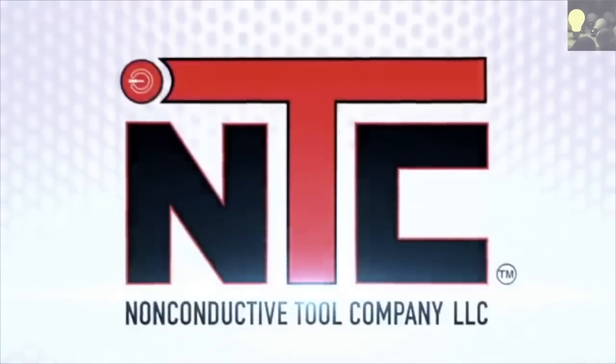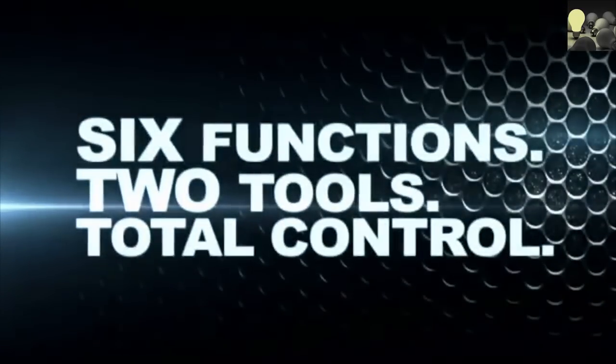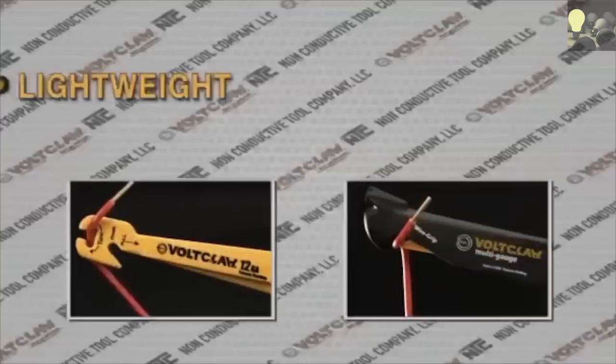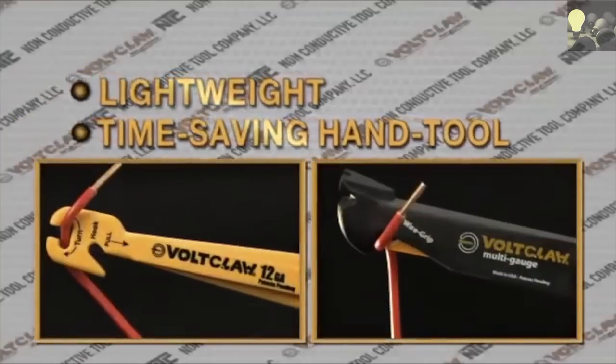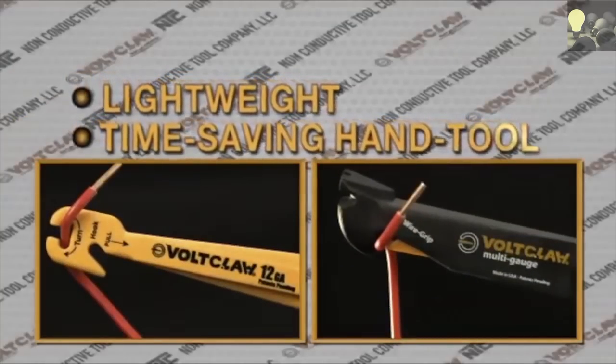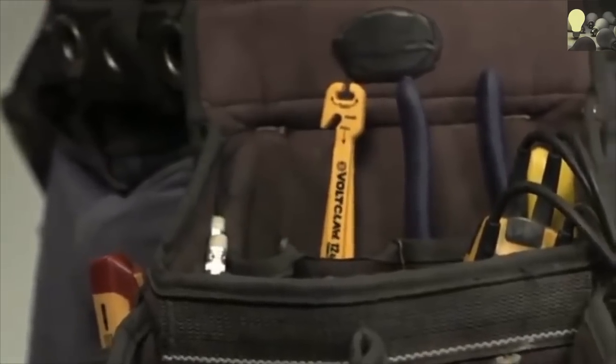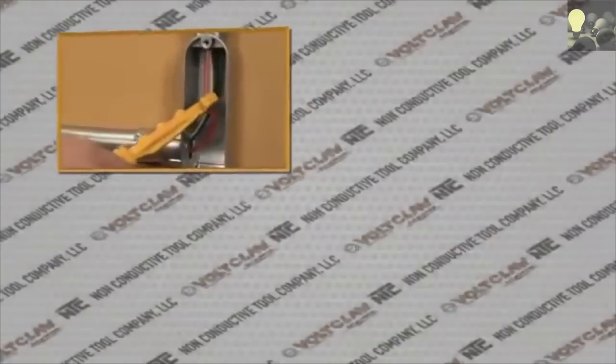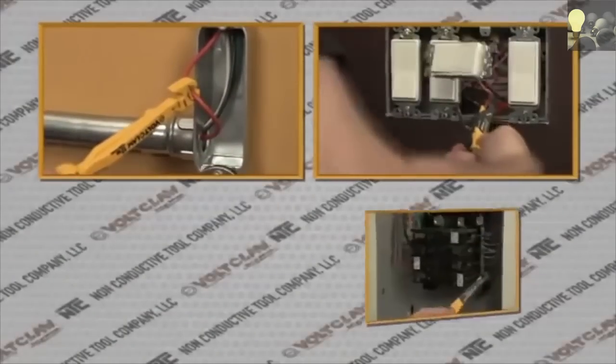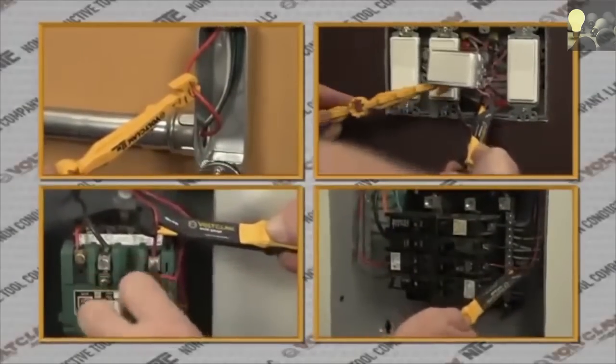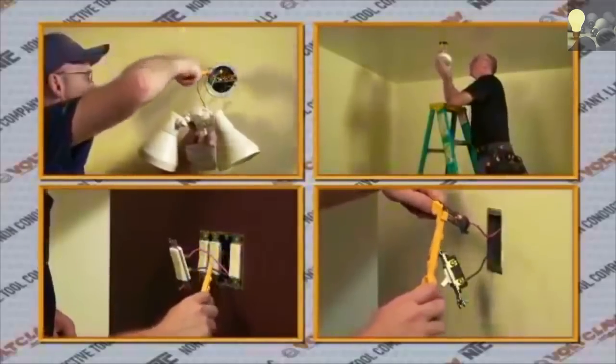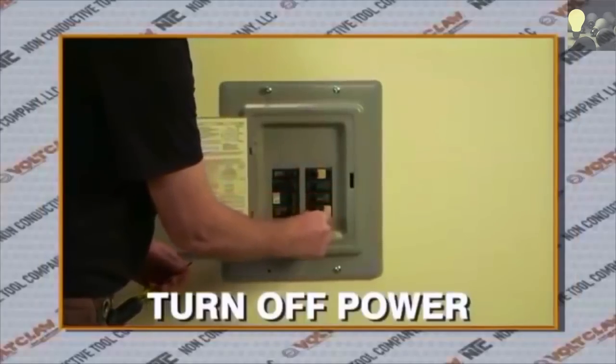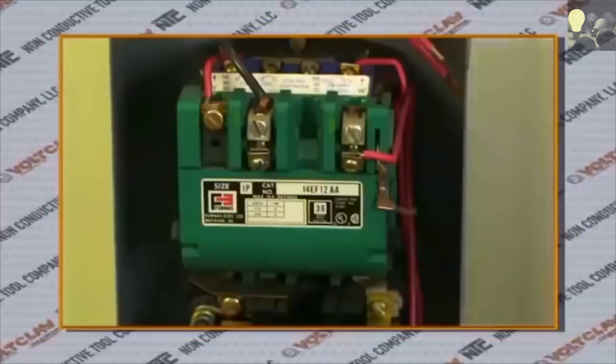From the non-conductive tool company, six functions, two tools, total control. Introducing VoltClaw, a lightweight, time-saving tool designed to safely handle electrical wires. The VoltClaw is essential equipment for any electrician's tool belt for safely reaching junction boxes, switches, and breaker and service panels in any residential, commercial, or industrial wiring system. As is standard before any job, make sure to turn off power at the breaker box and check the contacts with your voltage detector.